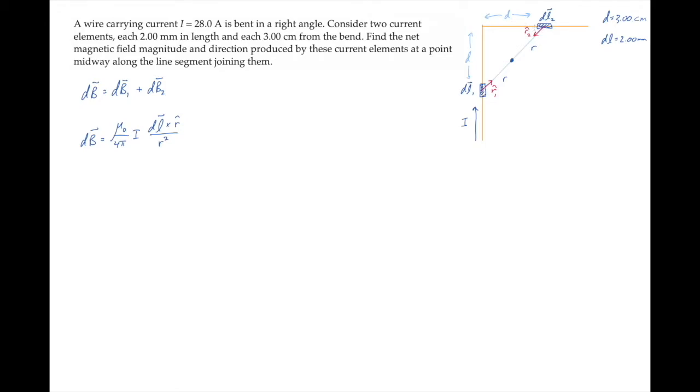We can use the right-hand rule to see that the magnetic field from each current element is directed into the screen at the field point. So we know the net field will be into the screen, and now we just need the magnitude.